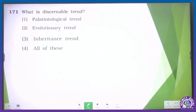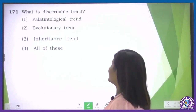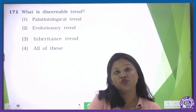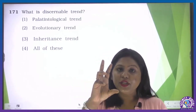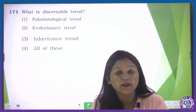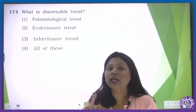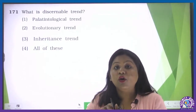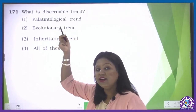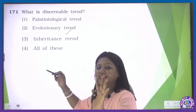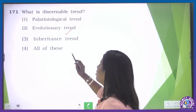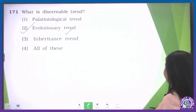What is a discernible trend? In the structural organization chapter, where we shift from tissue to organism level, it is stated that tissues make organs and organs make organ systems. The discernible trend includes complexity in organs — and this is an evolutionary trend. Paleontological trend relates to fossils. Inheritance trend is also not correct. So the correct option is evolutionary trend.